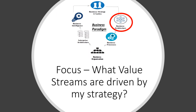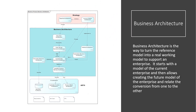We now have the strategy identified — what next? Once we've identified the strategy, we need to identify the business processes tied directly to it. Those processes are called value streams and they're handled under the area called business architecture. Business architecture is the way to turn the reference model into a real working model to support an enterprise. It starts with a model of the current enterprise and then allows the creation of the future model, relating the conversion from one to the other. The value streams identified in business architecture are tied to the strategy to help focus the effort on those things making the company successful.